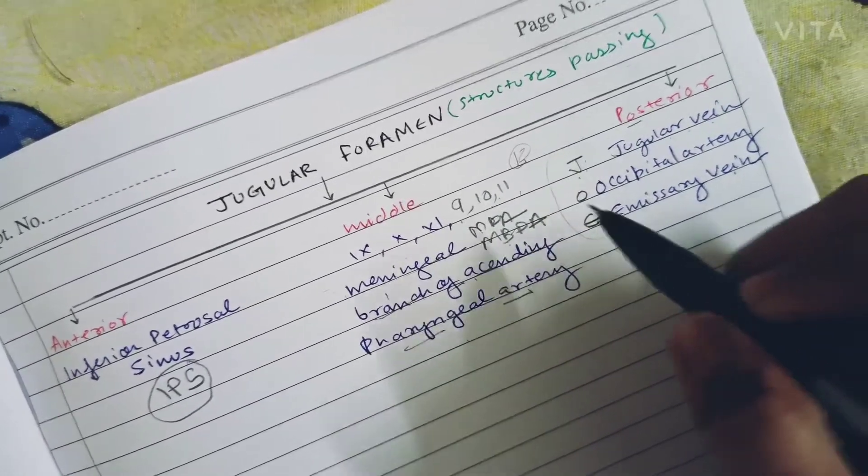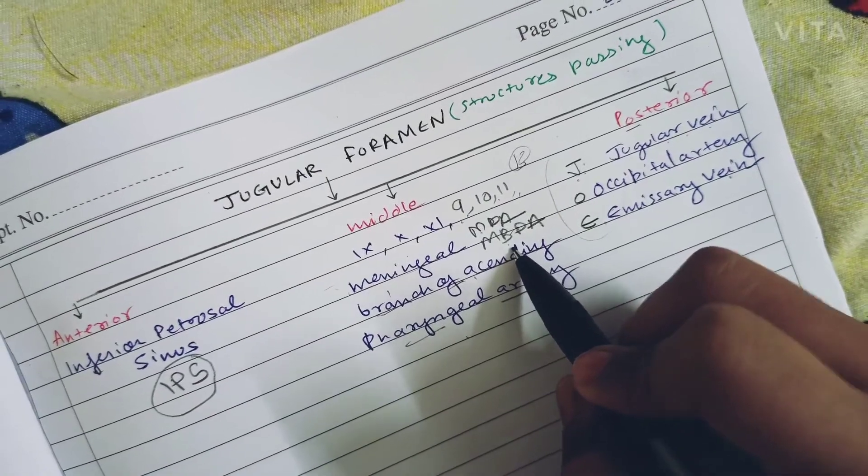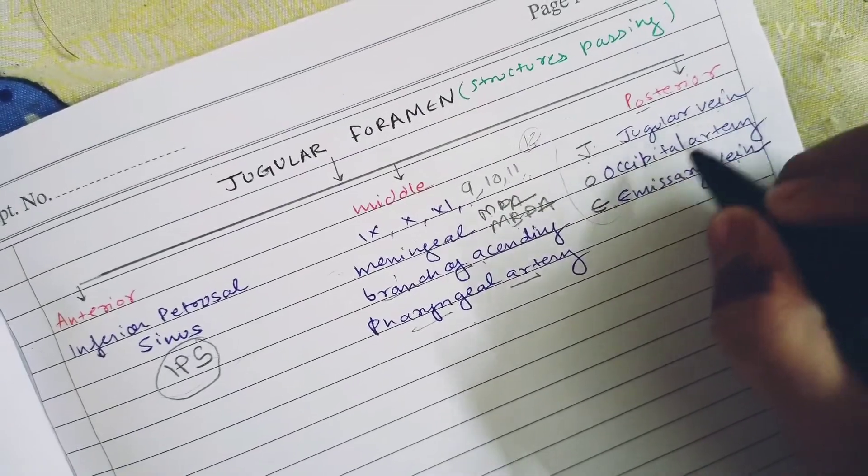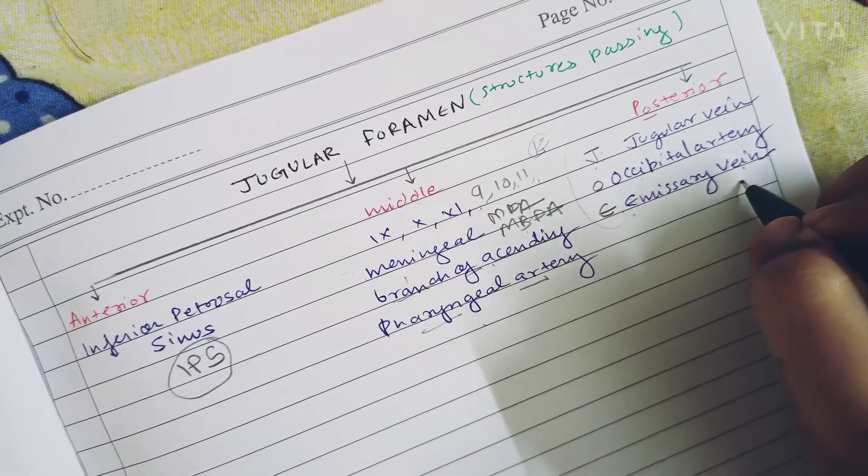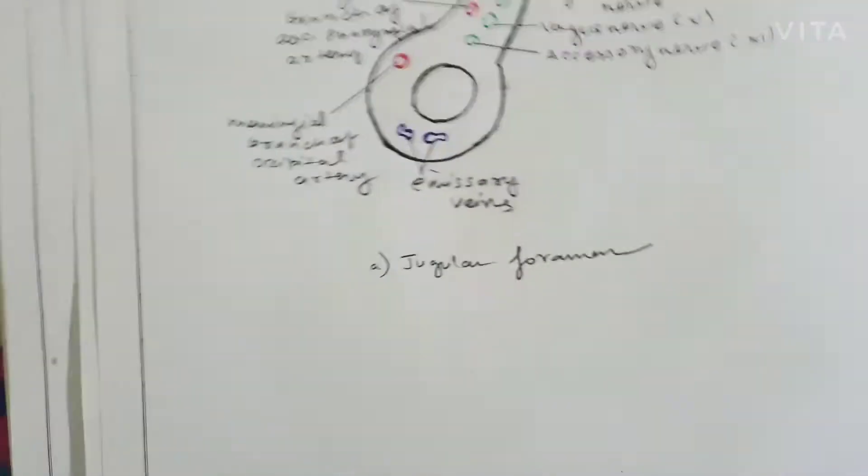This was the simplest trick. Let's see again: Joe did 9th, 10th, 11th, then did MBA, and then became IPS officer. Jugular vein, occipital artery, emissary vein. Now let's see in the diagram.